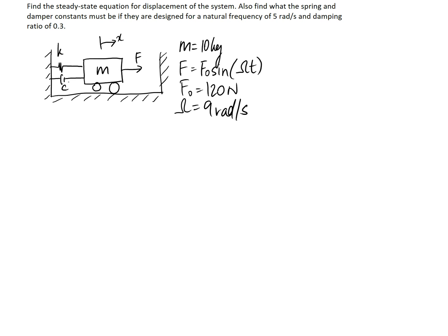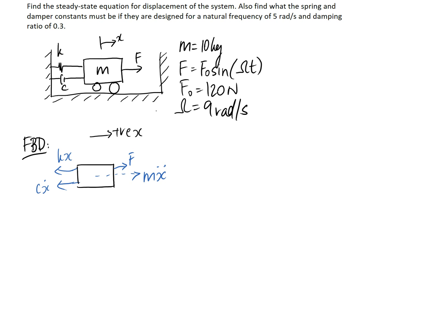We're trying to find K and C. Drawing a free body diagram to begin with: the mass times acceleration term is acting to the right in the positive x direction, and that's also the direction of the applied force F, which is a sine wave. The spring and damper are going to react back the other way to resist that motion. Those are all the forces on our mass in the x direction, or the direction of the vibration.